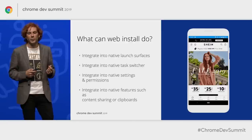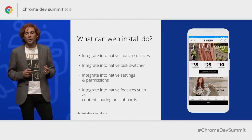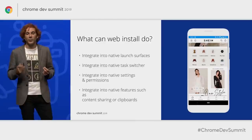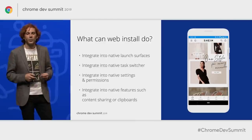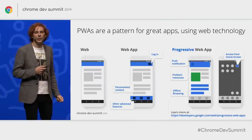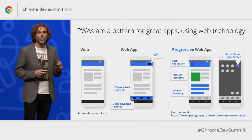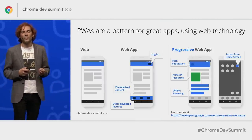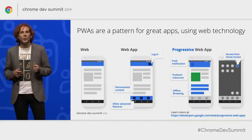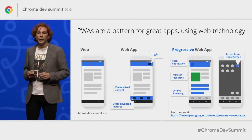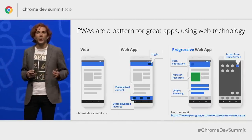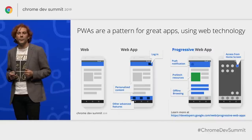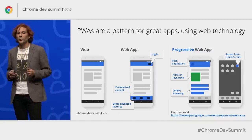The important thing to remember when asking a user to install a PWA is that with an installed app, you're telling the user it is an experience meant for their device. That means you need to live up to those expectations — otherwise you're going to have unhappy users. The good news is we have a pattern for building experiences that do just that: Progressive Web Apps.